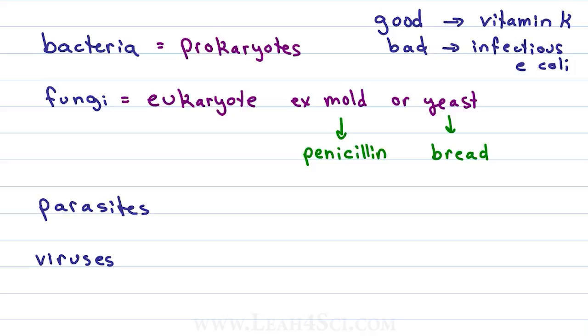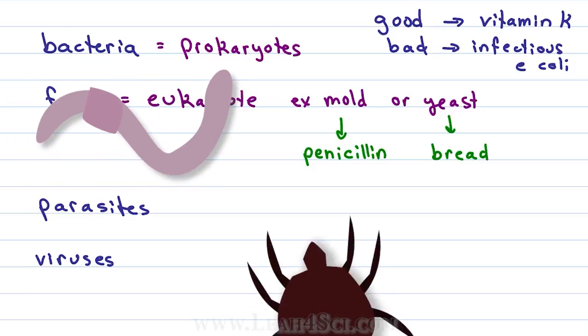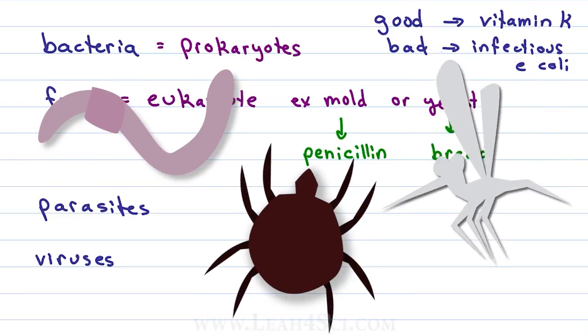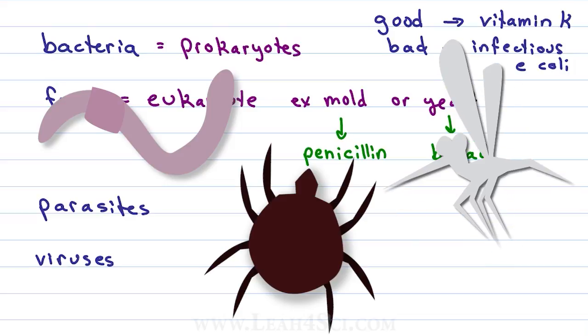When looking at pathogenic parasites, there are many that live within the body or outside the body and can range from worms, ticks, mosquitoes, and so much more. And finally, there are viruses.